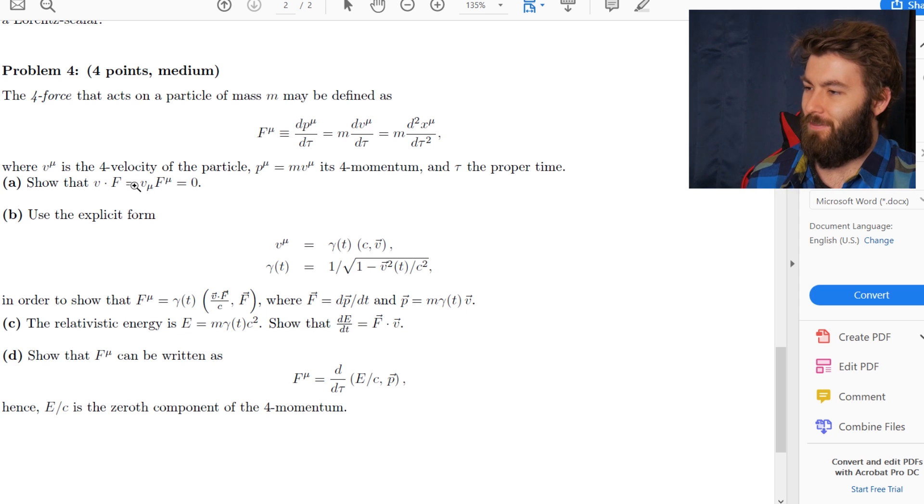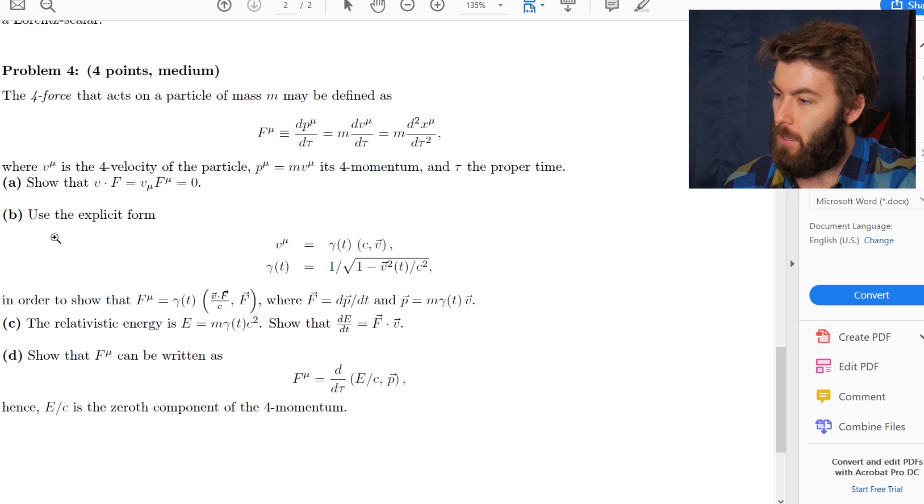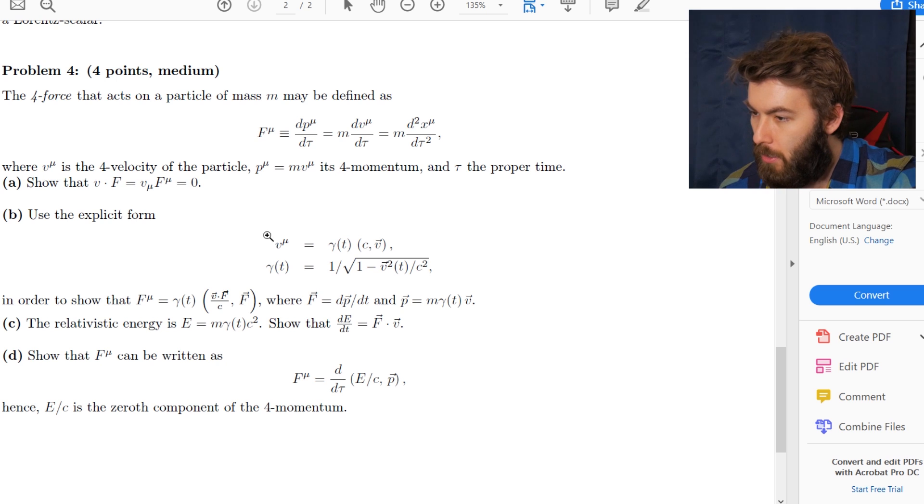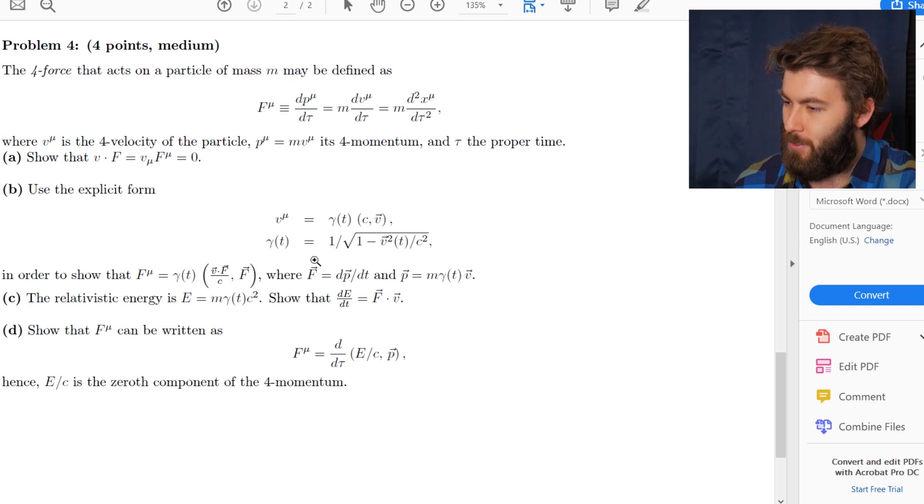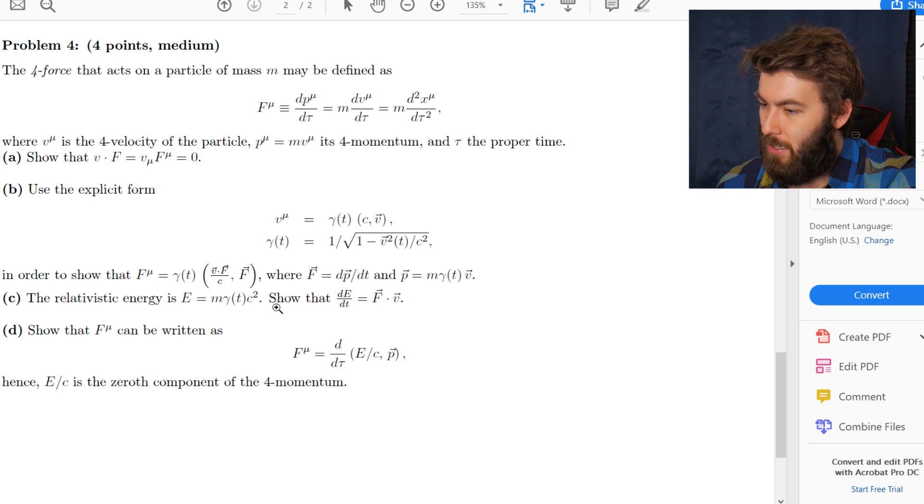The fourth force that acts on a particle of mass M may be defined as this, where V mu is the four velocity of the particle, P mu is its four momentum and T is the proper time. Show that V dot F is zero. Use the explicit form to show that F mu is equal to gamma T times this. Show that F mu can be written as this.